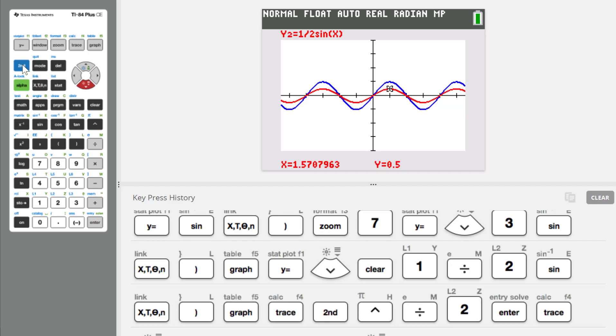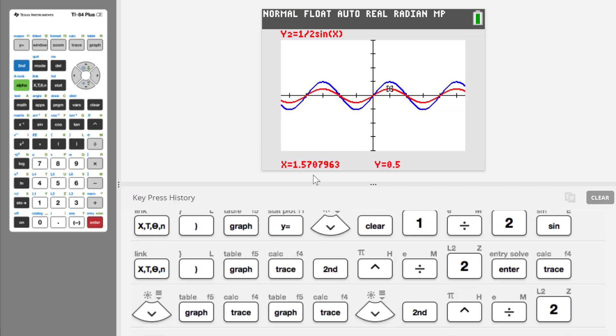I'll arrow down to the red graph. And then I'll type in pi over 2 and hit enter, and that will take me to that spot. And sure enough, you can see the y value there is 0.5, 1 half. So the amplitude is 1 half.